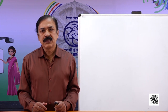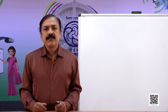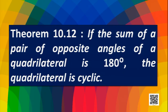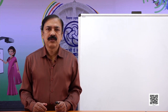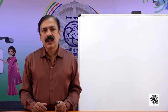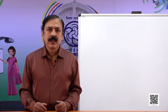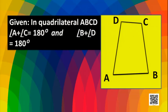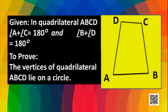Is there any converse of this theorem? Yes — if the sum of a pair of opposite angles of a quadrilateral is 180 degrees, then the quadrilateral is cyclic. That means if the sum of opposite angles is 180 degrees, then the vertices of that quadrilateral must lie on the same circle. In the figure, ABCD are four points where angle A and angle C are opposite, so their sum is 180°; similarly angle B and angle D are opposite, and their sum is also 180°. We have to prove that the vertices of quadrilateral ABCD lie on a circle.